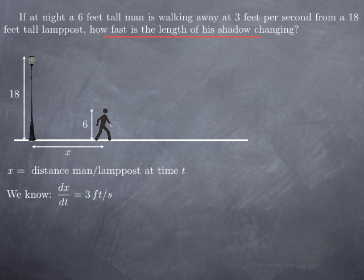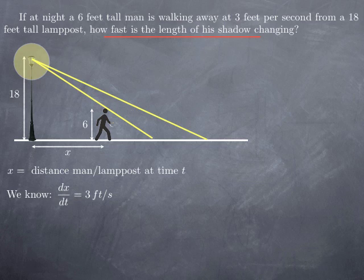We want to know how fast is the length of his shadow changing. Of course, the first thing we need to understand is where is his shadow in this situation. Here is the light source and so the light rays, this light ray for instance reaches the ground. Those that are pointing further away of course reach the ground as well. However, this type of light rays will be intercepted by the body of the man and this is why we have this shadow at his feet ahead of him.